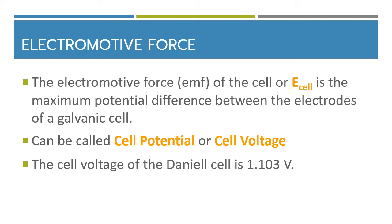Now that we know how to connect two half cells together, the cell potential between them can be measured by a multimeter and also calculated from standard values. The electromotive force of the cell is represented as E_cell, and this can also be called cell potential or cell voltage. This is the maximum potential difference between the electrodes. For example, the Daniel cell — the connection between the zinc half cell and copper half cell — has a cell voltage equal to 1.1034 volts.